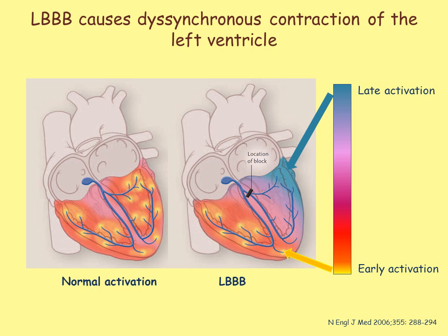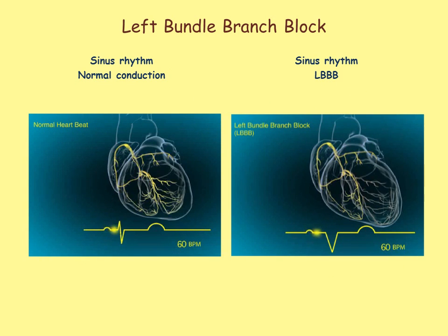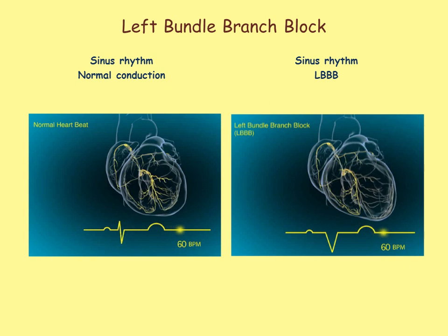Left bundle branch block results in delayed and uneven activation of the heart muscle and dyssynchronous contraction of the left ventricle. Usually, the lateral wall is the site of latest contraction. This obviously may result in substantially reduced cardiac performance. This animation demonstrates the differences between sinus rhythm and left bundle branch block. As can be seen, the conduction block in the left bundle results in slower and delayed activation of the left ventricle.